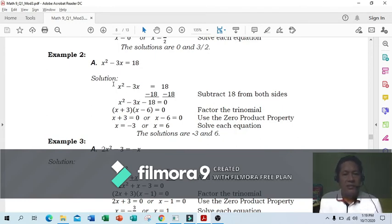Example 2: x squared minus 3x equals 18. All terms should be on the left side. Move 18 to the left. Subtract 18 from both sides, or transpose—when it moves, it becomes negative 18. Using subtraction property of equality: x squared minus 3x minus 18 equals 0. Factor the trinomial.